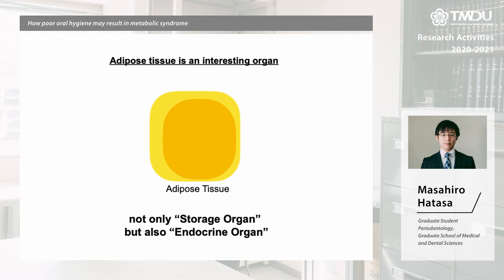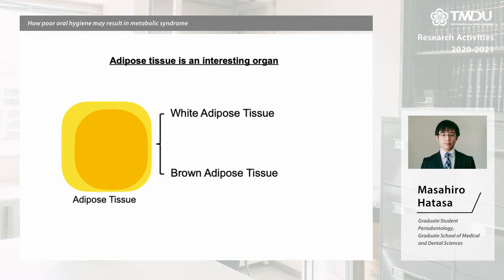Adipose tissue is an interesting organ. It is generally known as an energy storage organ, but it also works as an endocrine organ. Adipose tissue can be divided into white and brown adipose tissues.